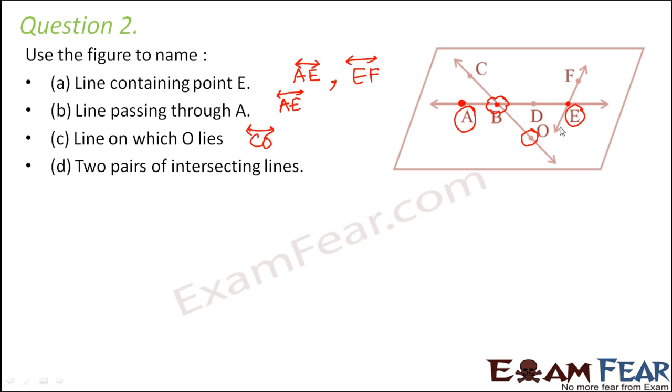Similarly, this is one line, this is another line and these two lines have a common point here. So basically one pair of intersecting lines would be AE and CO. The other pair of intersecting lines would again be AE and FE or EF. So these are the two pairs of intersecting lines.